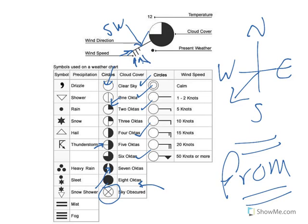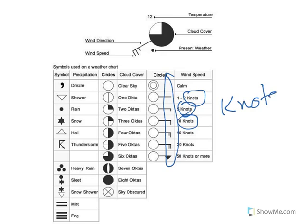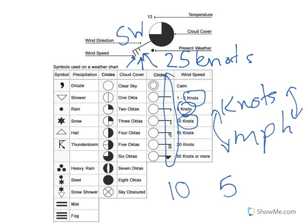There is a little tick that comes out the end, and that tells us the wind speed. We don't talk about wind speed in miles per hour — rather, we talk in knots. Knots and MPH are actually very similar in terms of speed. Knots is more nautical, but wind is calculated in knots. Each large tick represents 10 knots, and a half tick represents 5 knots. In this case, we've got two full ticks and a half tick, so that's 25 knots. The wind is coming from the southwest at 25 knots.